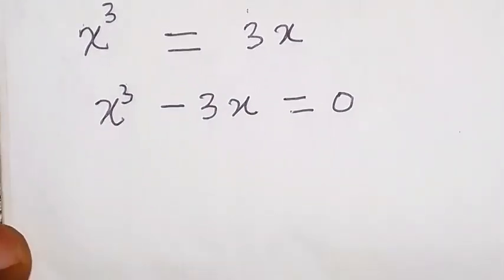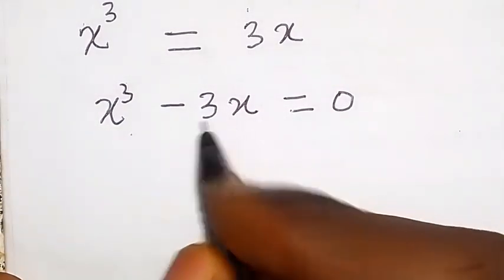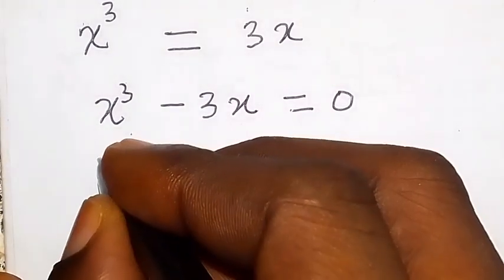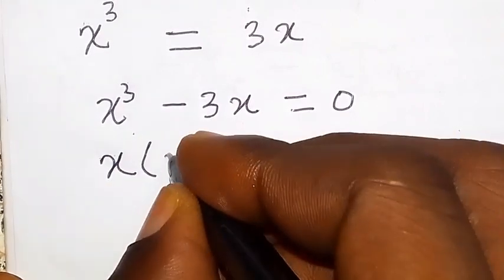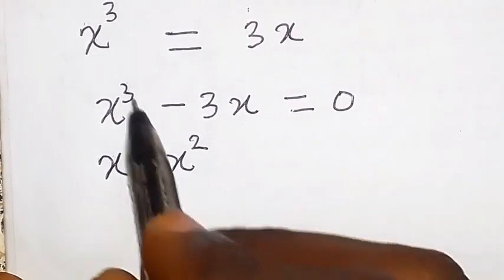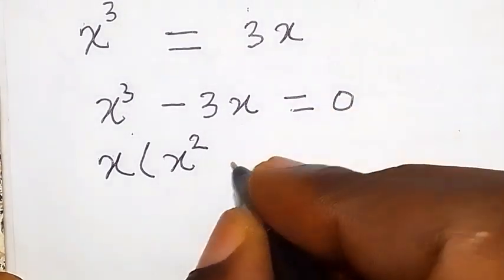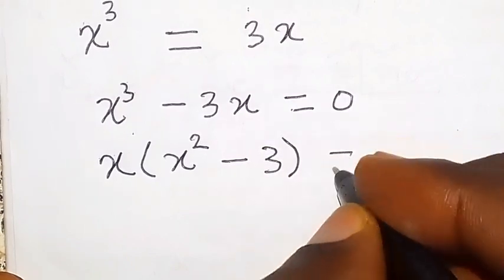Then, we can see that we can factor x out here. We have x is common. So, when we factor x out, we have x into bracket x square. Because when x divides x cube, we get x square. Then minus 3. Then that is equal to 0.